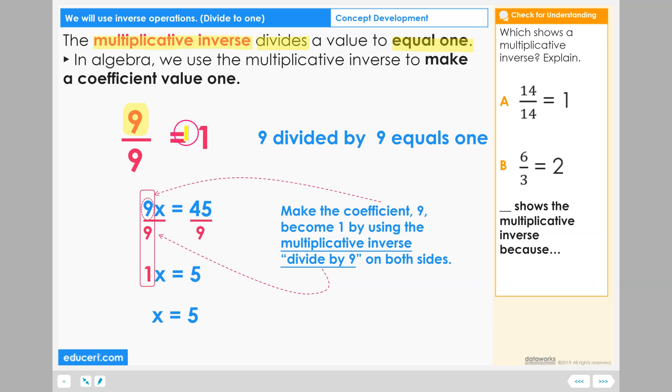We have nine and our goal is to make nine become one. How can you do that? Well, the only way you can divide and get one is if you're dividing the same values. So the multiplicative inverse is to divide the exact copy of itself to get one. Nine divided by nine equals one.